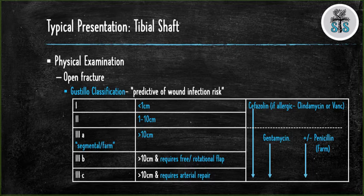Type 3 is broken down into 3 subtypes. 3a is when it's greater than 10 cm. 3b is when you require a free or rotational flap to close the skin. Type 3c is when there's arterial injury that requires repair.